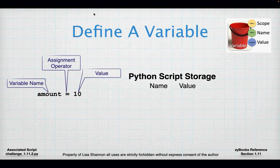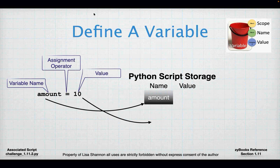Computers have two resources: they have space and they have speed. We're not going to deal with speed in this class, but we are going to deal with space — storage space. Every variable you create in Python takes up space in the running memory of that program. I have the word 'amount' related to the value 10, so when I use 'amount,' Python says, okay, she means 10.